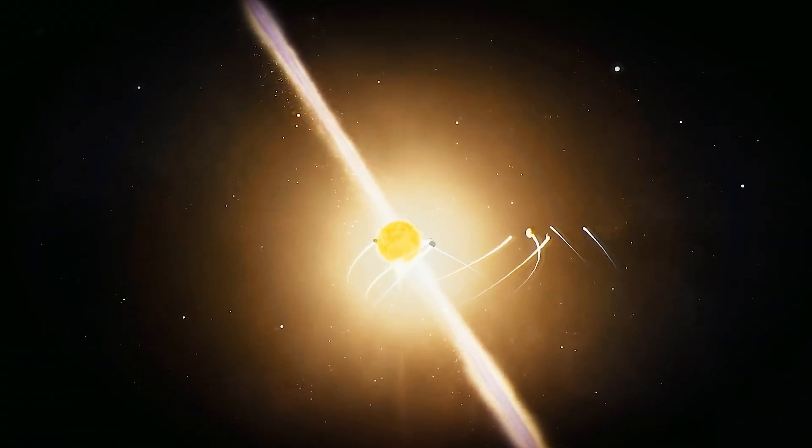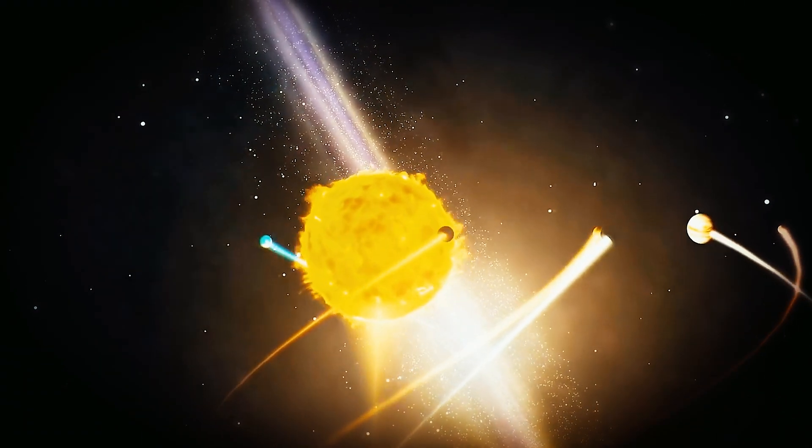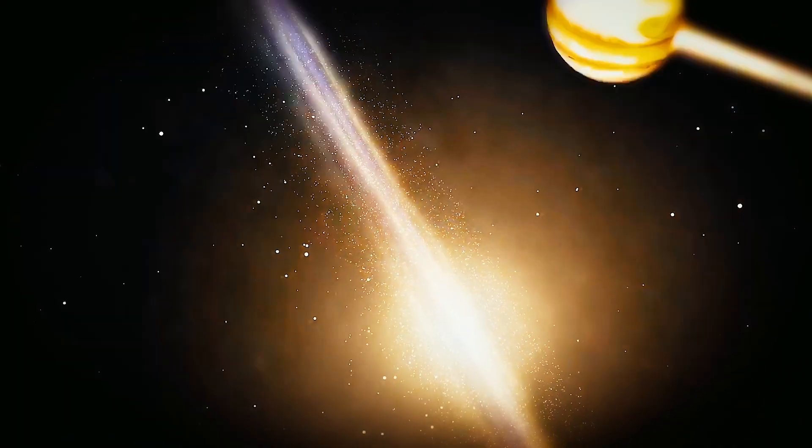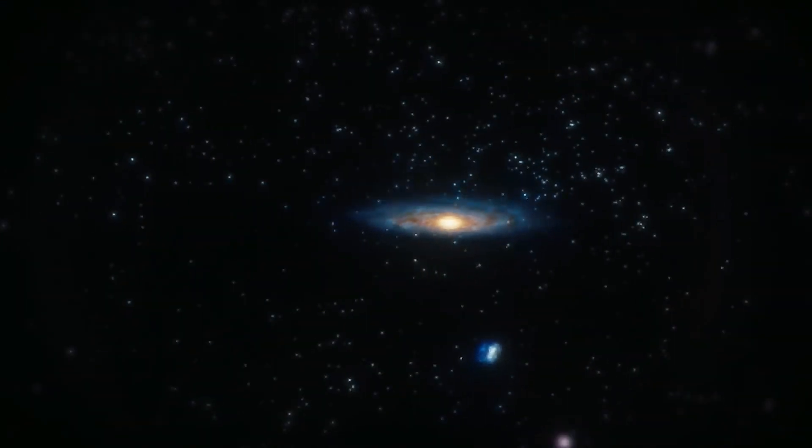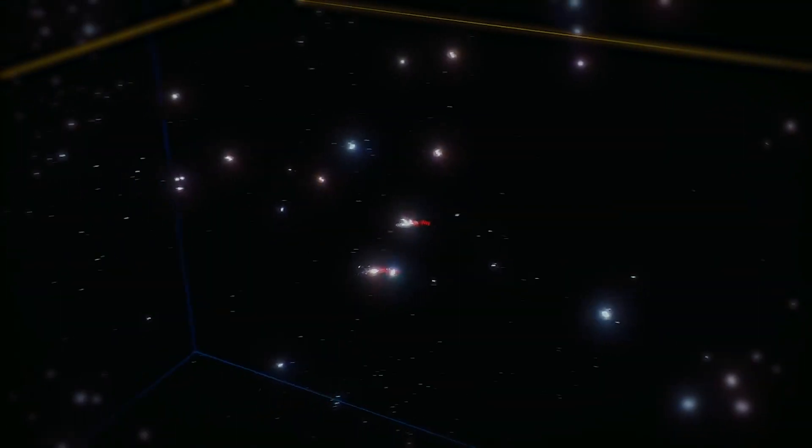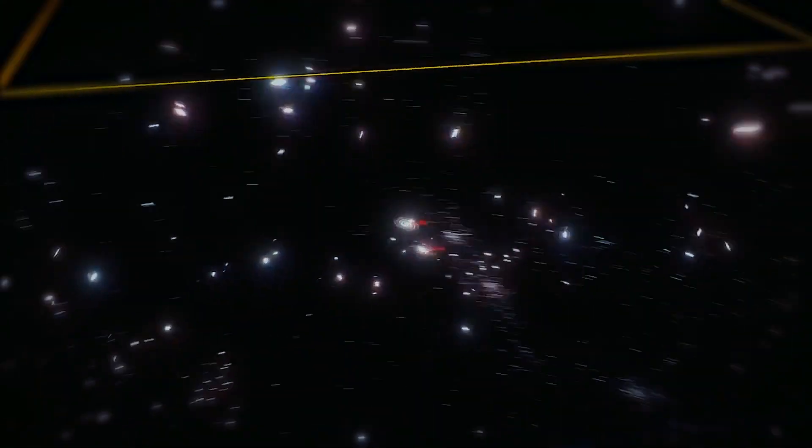We now know that the Earth revolves around the sun, which in turn revolves with us around the center of the Milky Way galaxy. Moreover, the Milky Way and about 50 neighboring galaxies revolve around an invisible center of gravity in the Virgo supercluster.